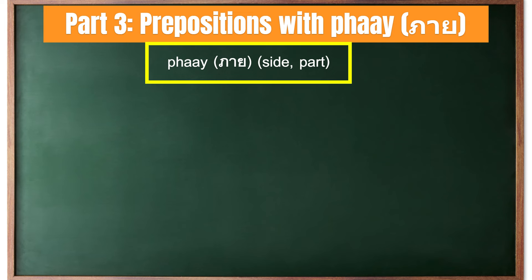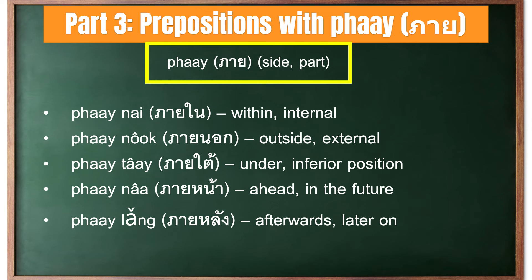ภาย is a prefix used with several prepositions to provide additional context and clarity. It translates to 'side' or 'part' and is often used to specify locations or situations more precisely. Here are the prepositions used with ภาย: ภายใน means 'within' or 'internal'; ภายนอก means 'outside' or 'external'; ภายใต้ means 'under' or 'inferior position'; ภายหน้า means 'ahead' or 'in the future'; and ภายหลัง means 'afterwards' or 'later on'.